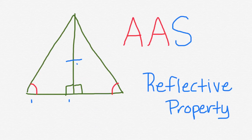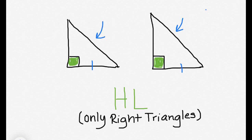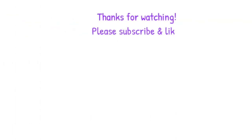This postulate is called the Hypotenuse-Leg, and it only applies if you have two right angles. This is going to be your hypotenuse, and the dash here indicates that those two legs are congruent. So this would be congruent based on the Hypotenuse-Leg postulate. Remember, it can only be used when you have right angles.